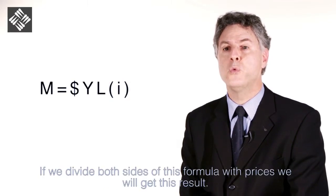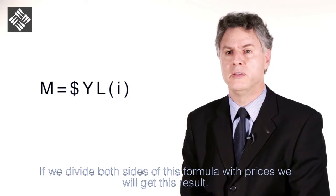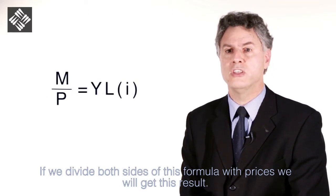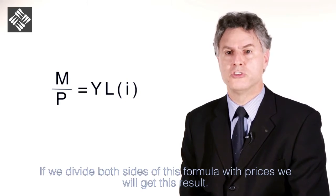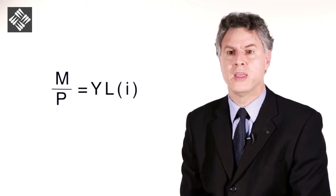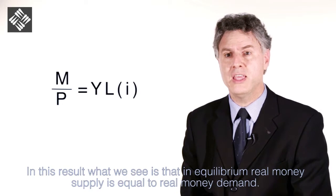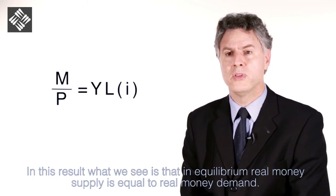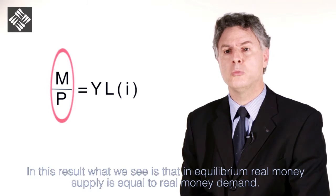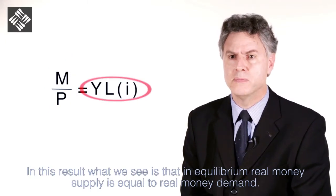If we divide both sides of this formula by prices we will get this result. In equilibrium, real money supply is equal to real money demand.